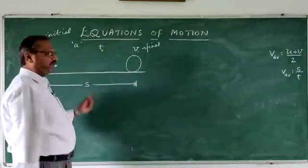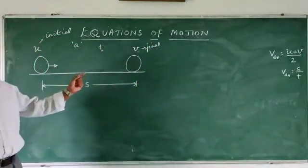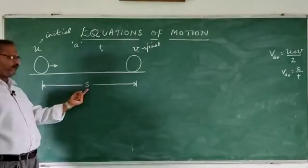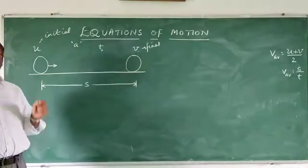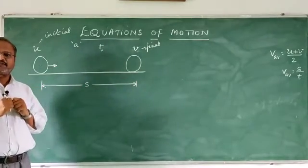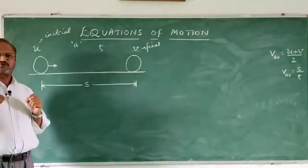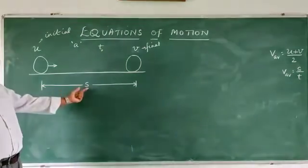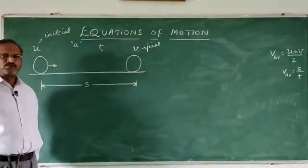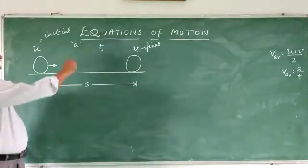Now, the time taken for this motion is T. And the distance traveled by the body is usually used as S. S stands for in Greek, spatium, space. So, S is the symbol which we are going to use. And A is the acceleration. The acceleration is uniform.